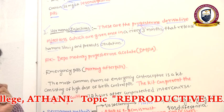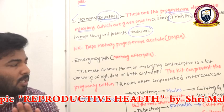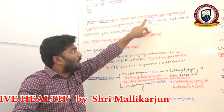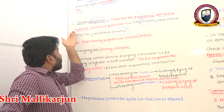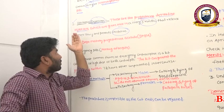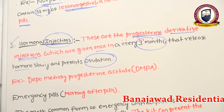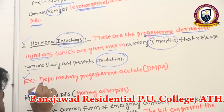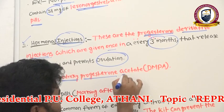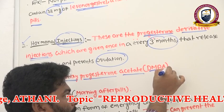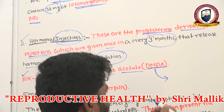Like mini-pills, these injections contain only progesterone hormone and its derivatives, given once every three months to prevent ovulation. An example is Depo-Medroxyprogesterone Acetate, abbreviated as DMPA.